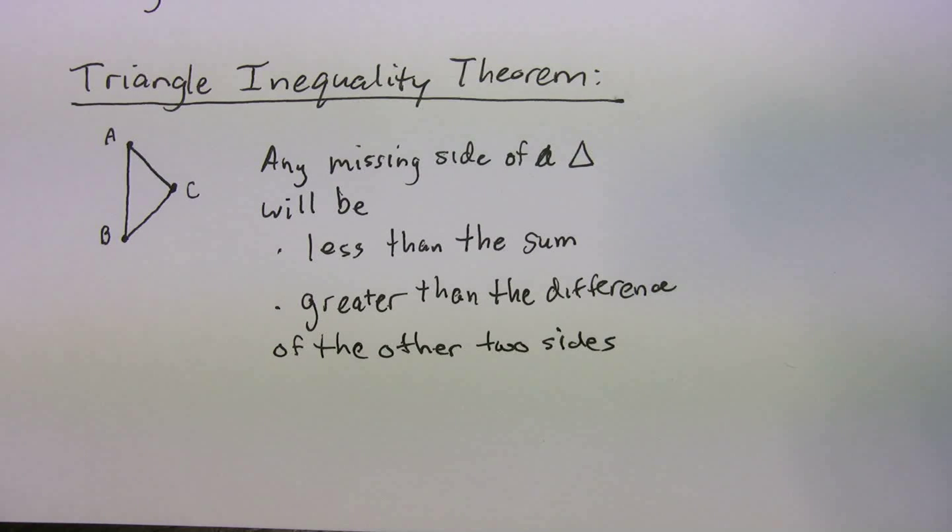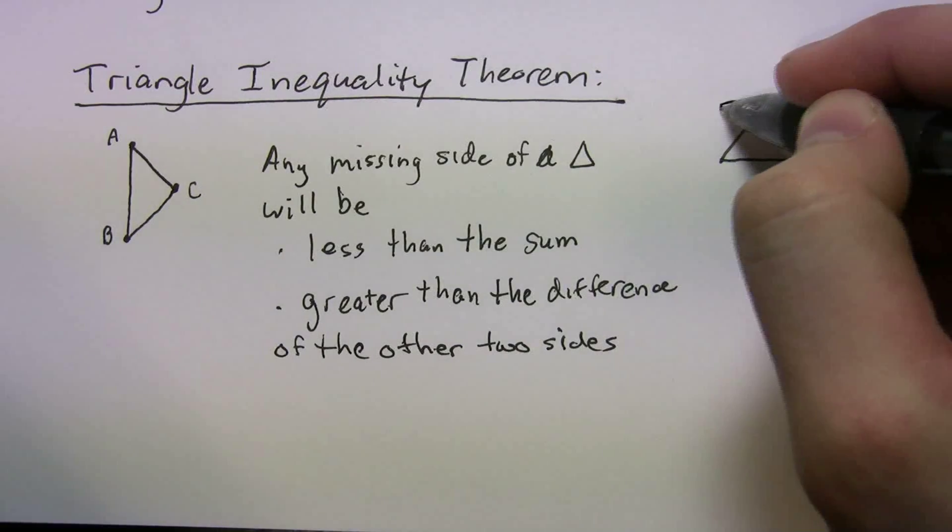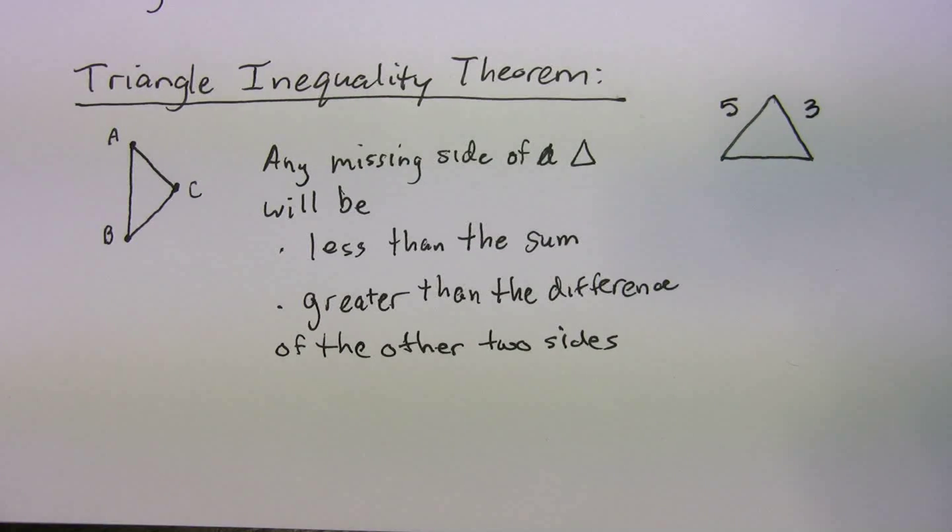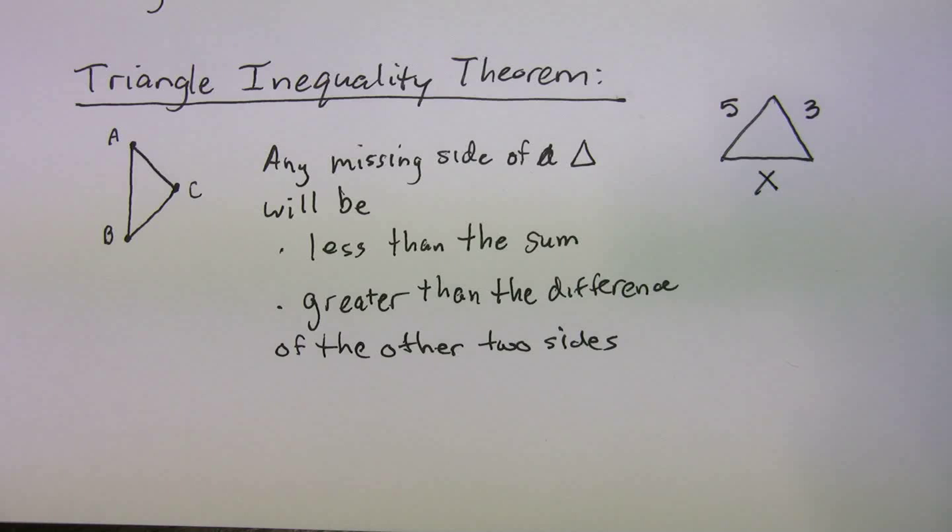So let me say that again. Any missing side of a triangle will be less than the sum and greater than the difference of the other two sides. So let me give you an example of that. Let's say I had a triangle, and I told you that in this triangle, this was 5 and this was 3. And I asked you, what are the possible values that x could be?